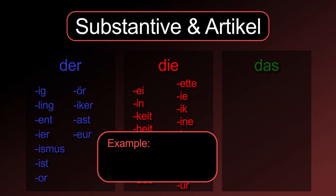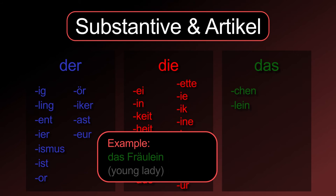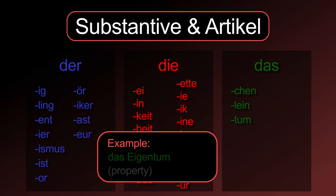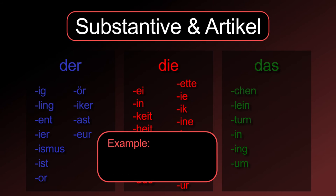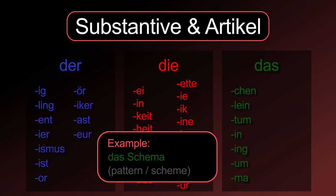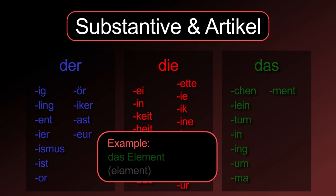Typical suffixes for neuter nouns. -chen: das Mädchen. -lein: das Fräulein. -tum: das Eigentum. -in: das Benzin. -ing: das Meeting. -um: das Studium. -ma: das Schema. -ment: das Element. -ett: das Amulett. -o: das Studio.